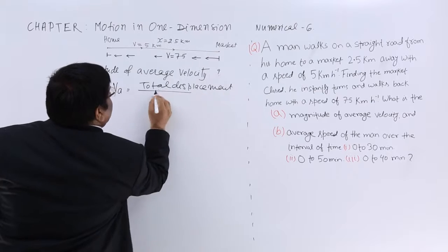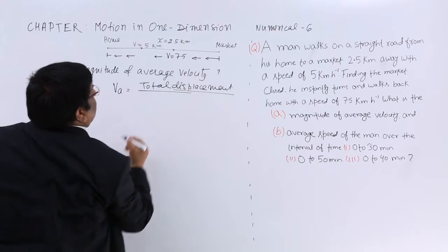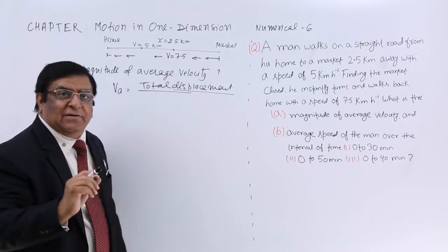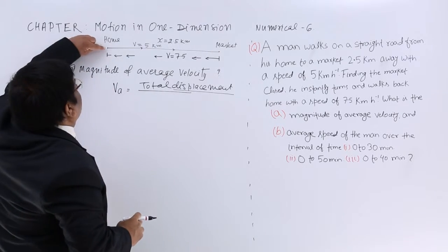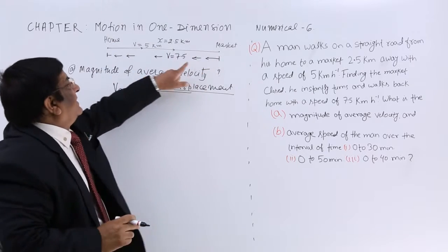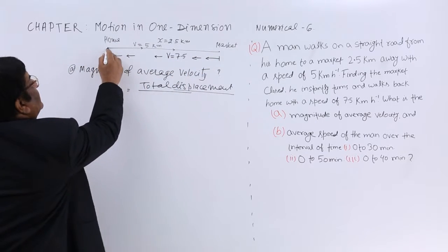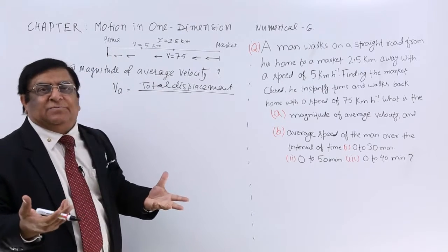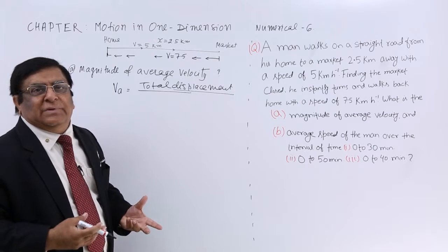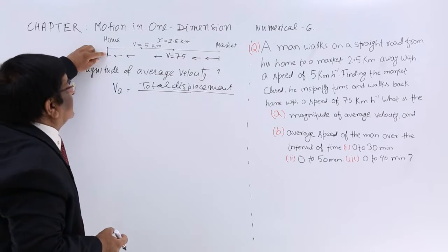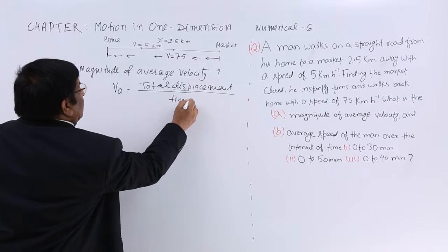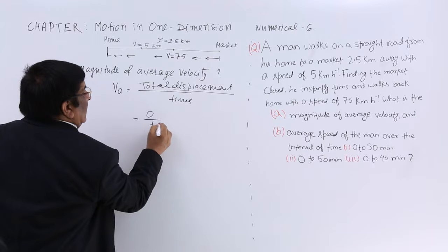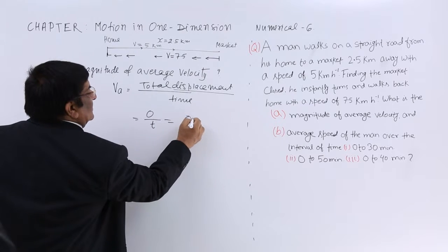Mind the word here: displacement. Total means from when the journey begins to when the journey ends. It starts from home and comes back to the same place. So how much is he displaced? He is not displaced — he is back at home. Therefore, the total displacement is 0, and 0 upon anything is 0.